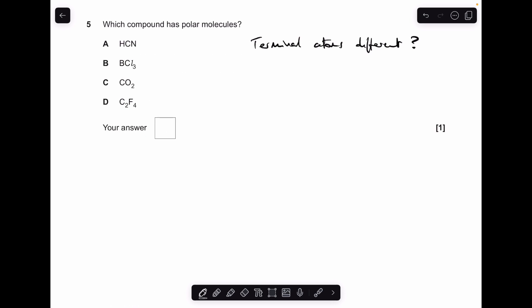Moving on to number 5. Nice quick one, this one. So a quick question you can ask about a molecule to see if it's going to be polar or not. Has it got different terminal atoms? And you can see that in A, you have got hydrogen and nitrogen around the central carbon. They're different. So HCN is going to be polar.